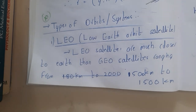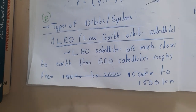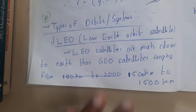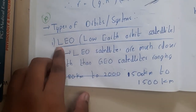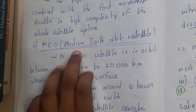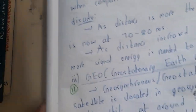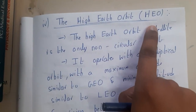Hello guys, we are back with our next lecture. In this lecture, let us go through the types of orbits or systems or satellites. We are having four different orbits: LEO (Low Earth Orbit), MEO (Medium Earth Orbit), GEO (Geostationary Earth Orbit), and HEO (High Earth Orbit).